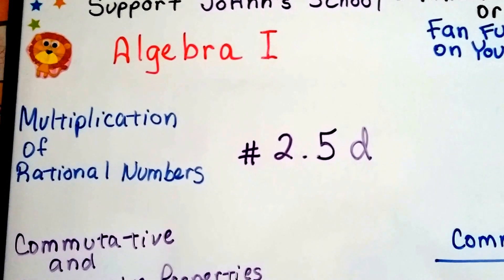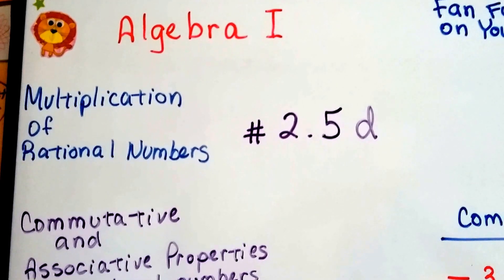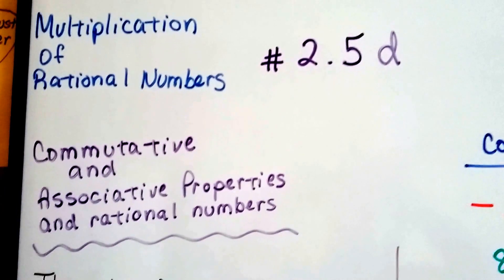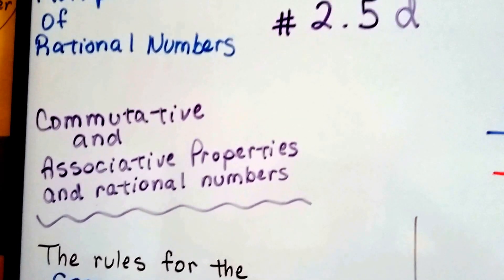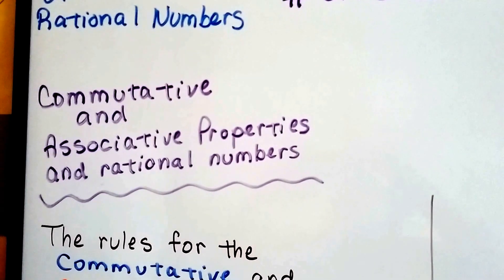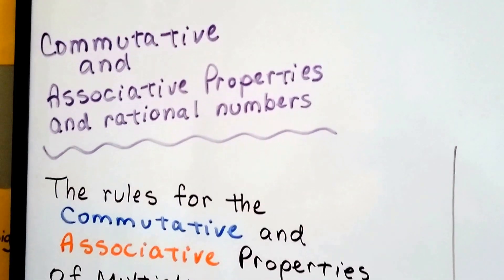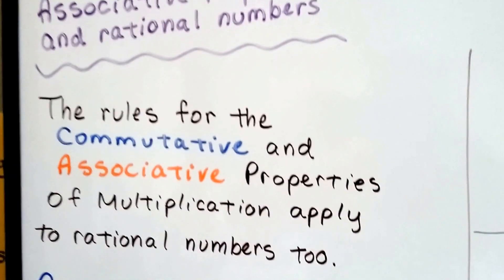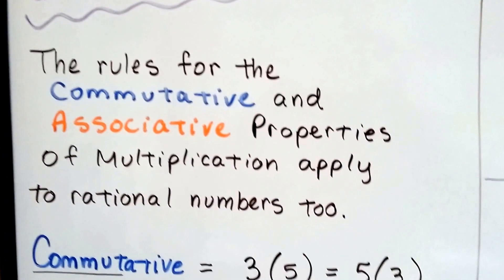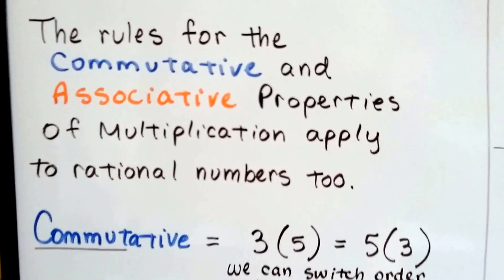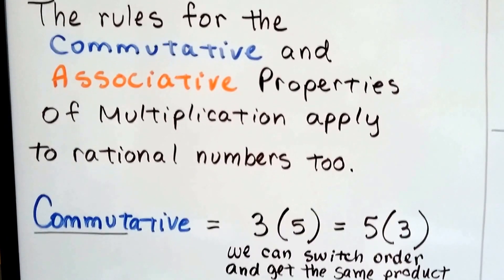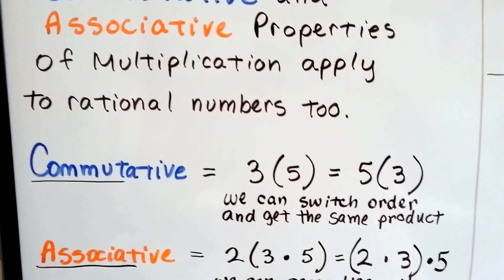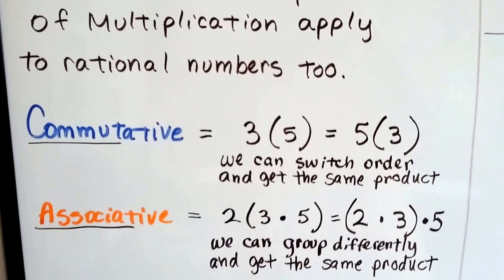Algebra 1, number 2.5d. We're still talking about multiplication of rational numbers, and now we're going to discuss the commutative and associative properties for rational numbers when we multiply. The rules for the commutative and associative properties of multiplication apply to rational numbers too.